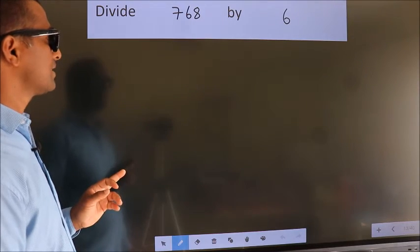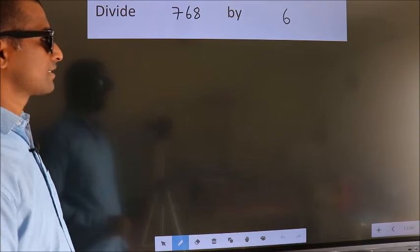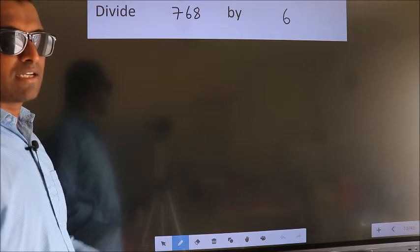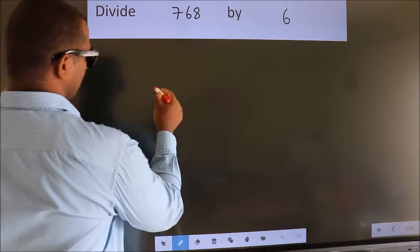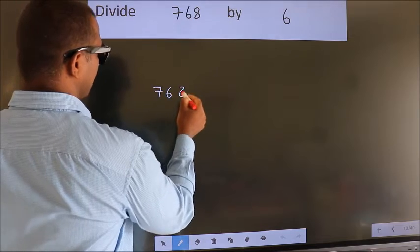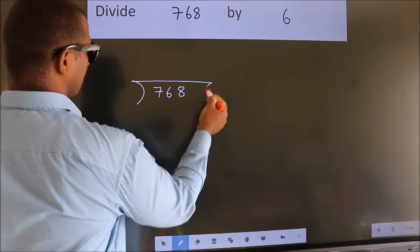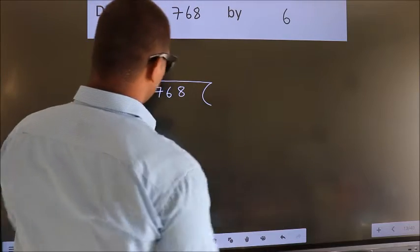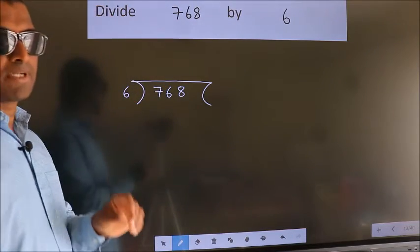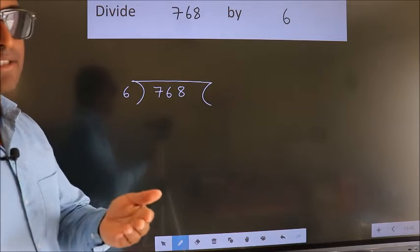Divide 768 by 6. To do this division, we should frame it in this way: 768 here, 6 here. This is your step 1. Next.